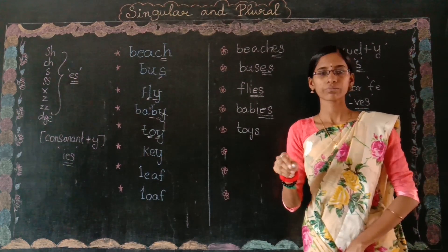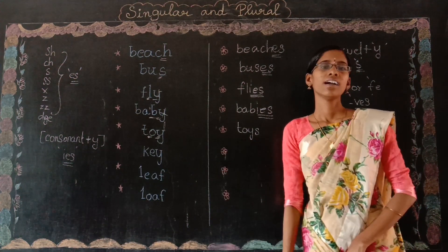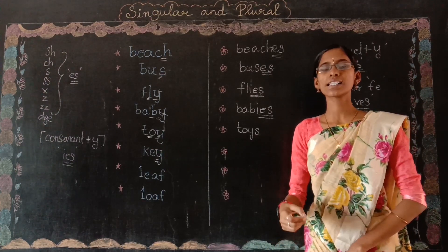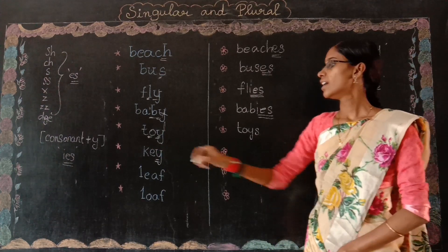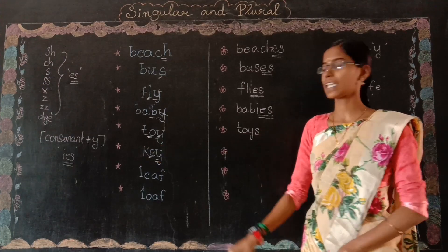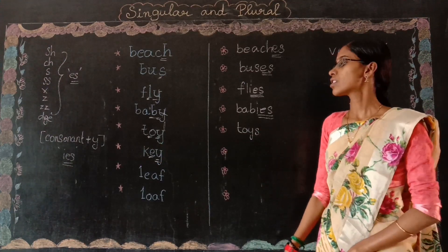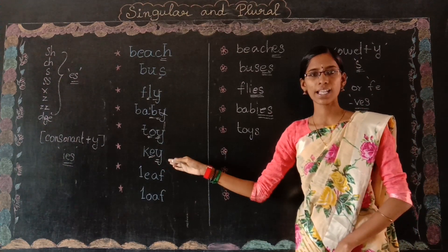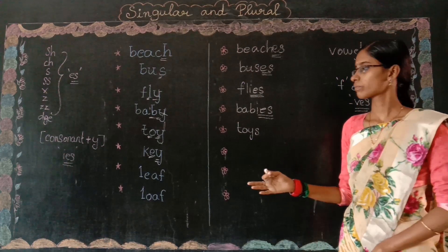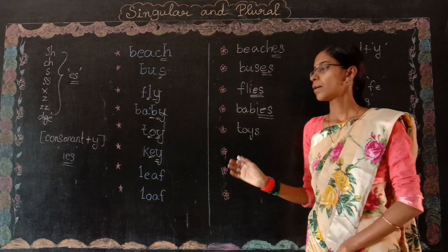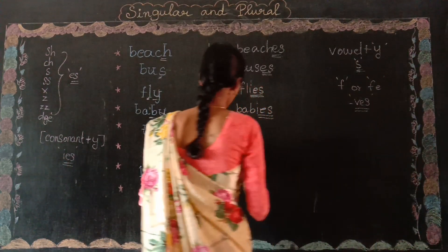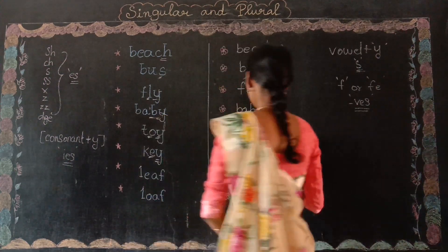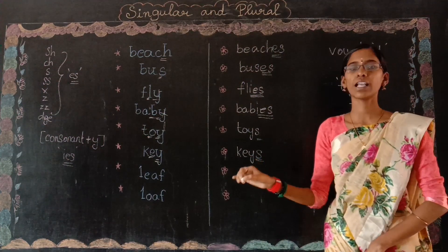See the next one: 'key.' It ends with Y, and before the Y is E, which is a vowel — A, E, I, O, U. So it ends with vowel plus Y. Without removing anything, we just add S. So 'keys' is the plural word.